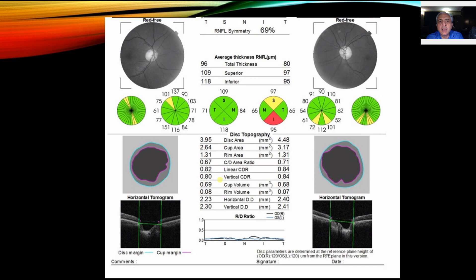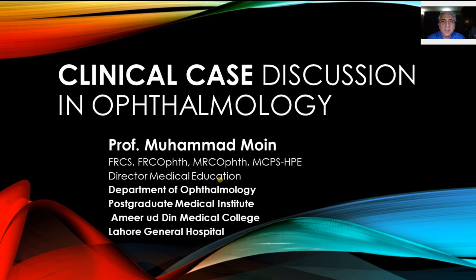Whenever you see a patient whose cup-to-disc ratio is changing, it means glaucoma damage is increasing. You need to bring the target pressure down — if it was 16, try to bring it down to 12, because the AGES study has shown that keeping pressure at 12 mmHg results in minimum loss of retinal nerve fiber layer. If you cannot achieve that with eye drops, supplement with selective laser trabeculoplasty or consider trabeculectomy. That concludes our case for glaucoma. This is a short review of how you would manage your patient when seeing them in outpatients. Thank you very much for watching and we look forward to seeing you back.